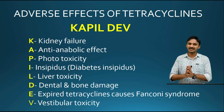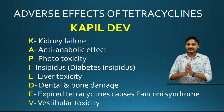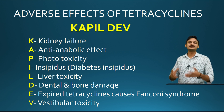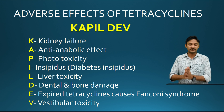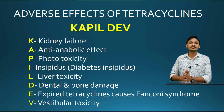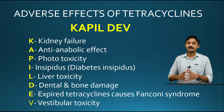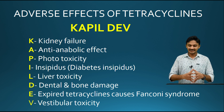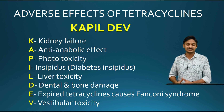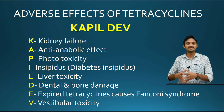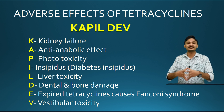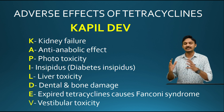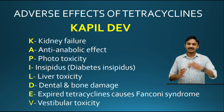The next letter A represents anti-anabolic or catabolic effect - tetracycline can cause anti-anabolic effect. P represents photosensitivity, which is maximum with demeclocycline. I represents diabetes insipidus, also maximum with demeclocycline.